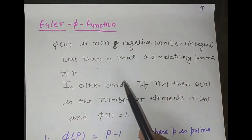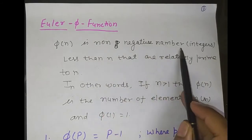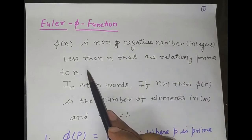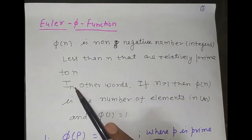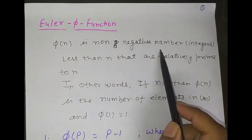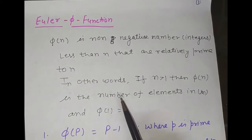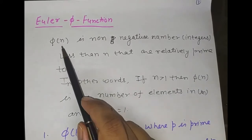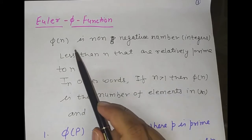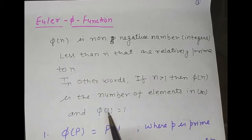Look at this Euler phi function — this is the definition. This definition says that φ(n) contains the non-negative integers which are less than n and relatively prime to n. In other words, if n is greater than 1, this is similar to U(n) group as we have defined. And φ(1) is equal to 1.